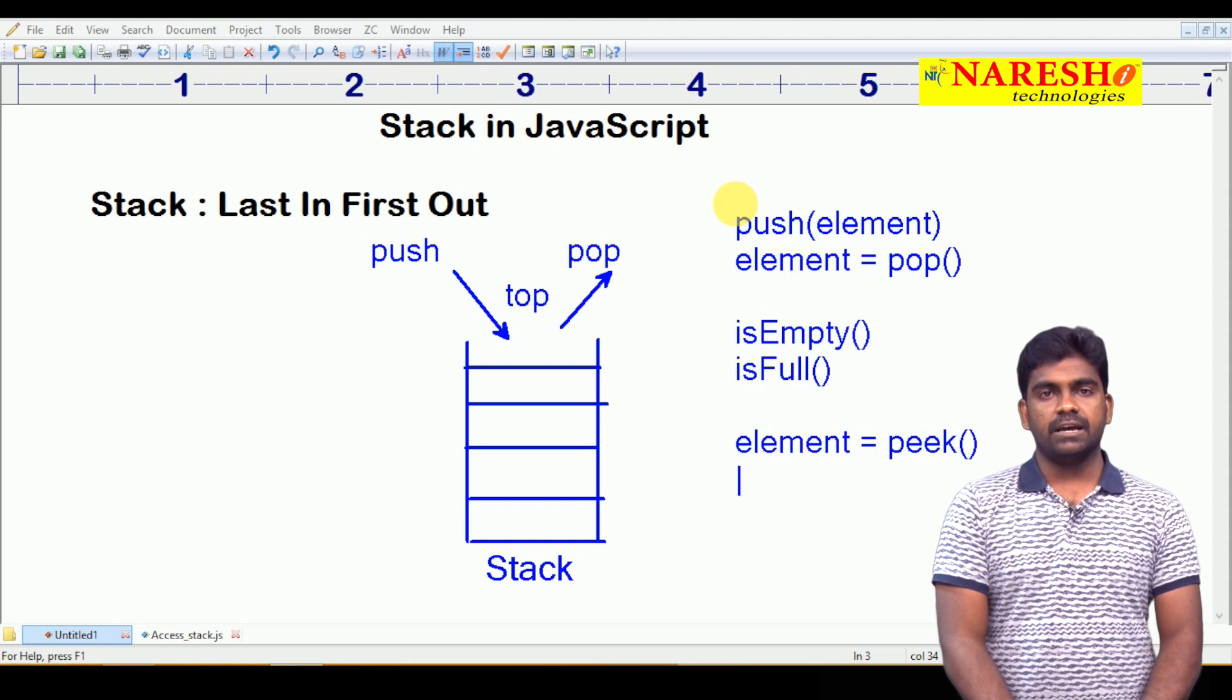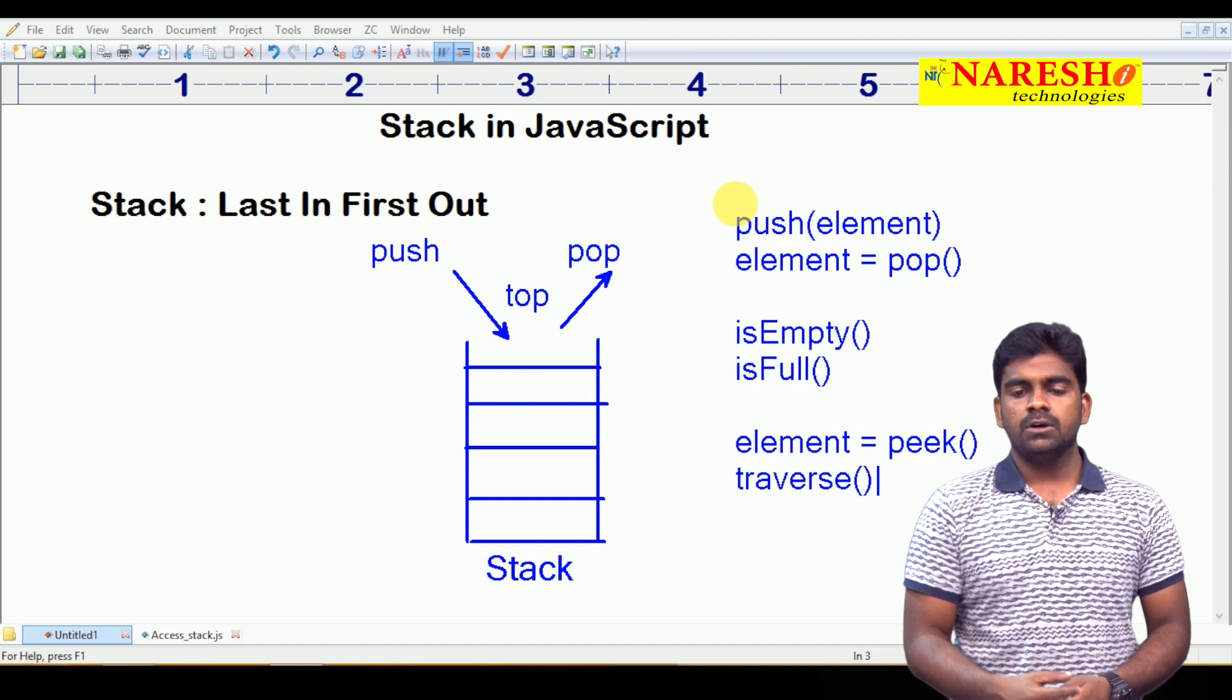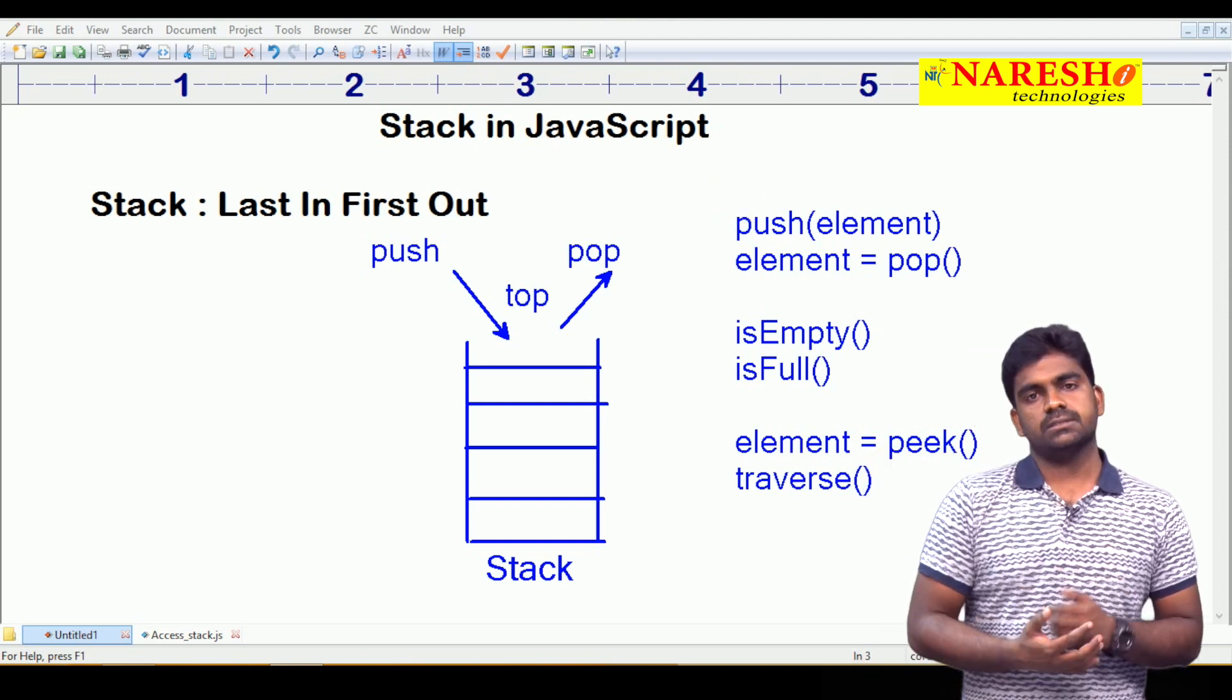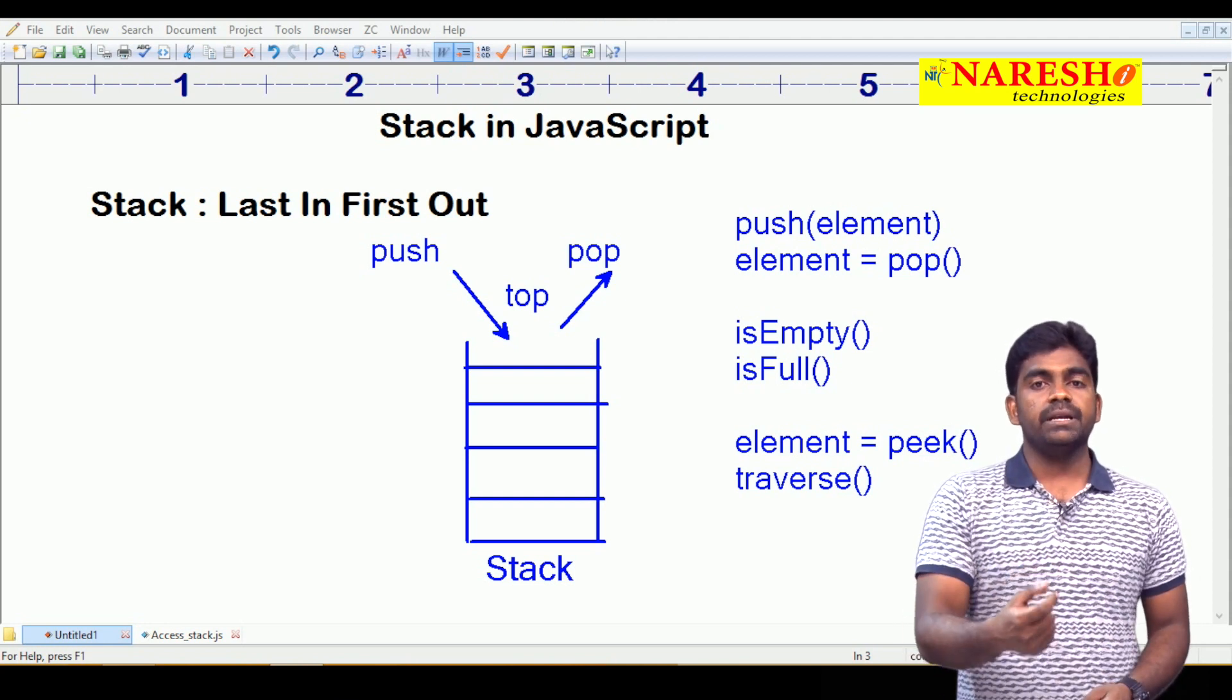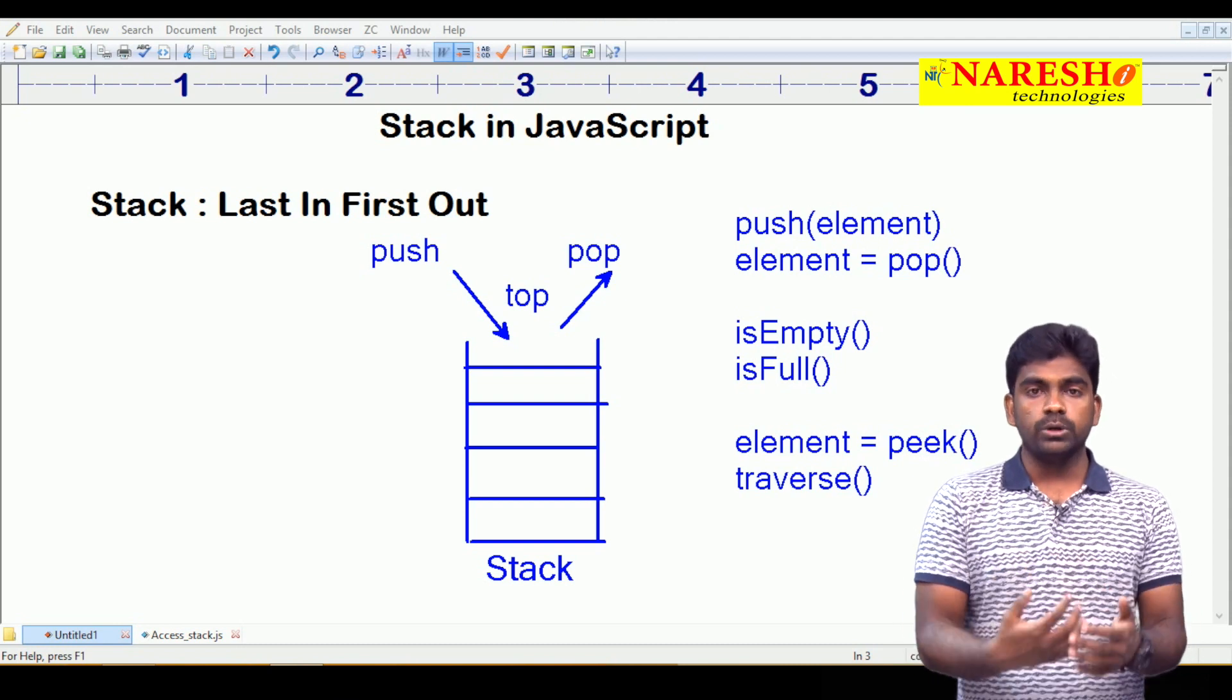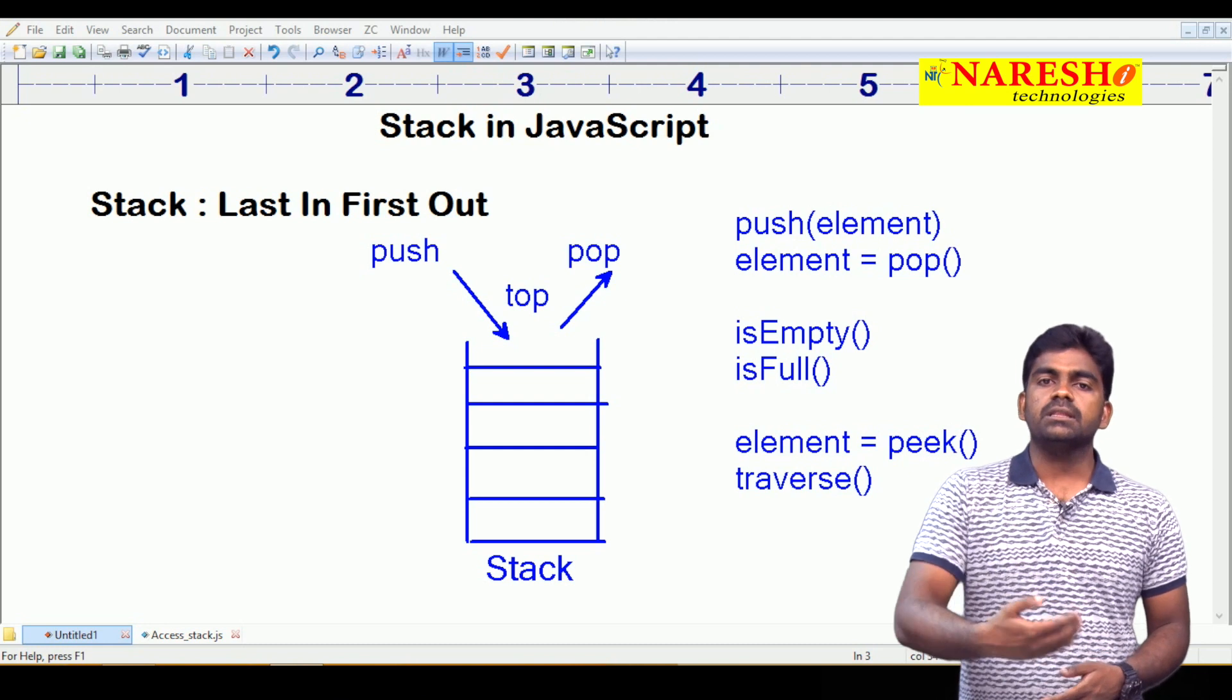Next one is traverse. Traverse is nothing but display. According to algorithm we use that word traverse, or simply we can call it as display. These are the six functions, the six methods we are implementing to implement the stack algorithm. How to implement, how to write the code? Program implementation we will see in the coming video.